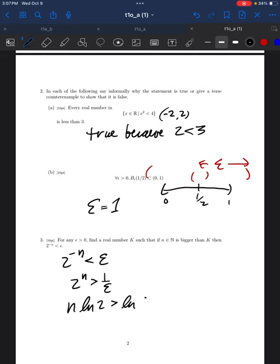Which is the same thing as saying that n times the natural log of 2 is greater than the natural log of 1 over epsilon. Or a simpler thing to do is to take the log base 2. The log base 2 of 2 to the n is n is greater than the log base 2 of 1 over epsilon.